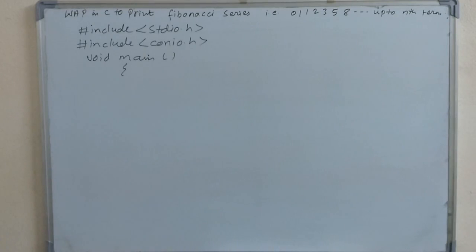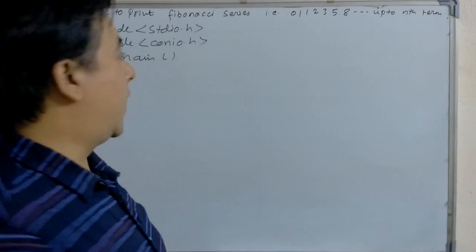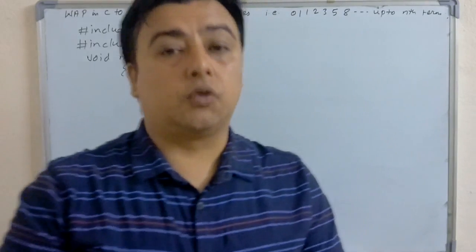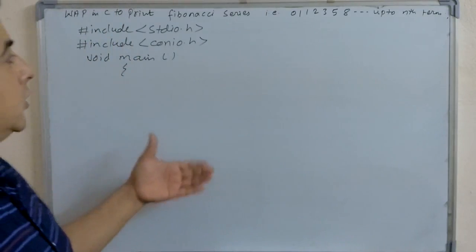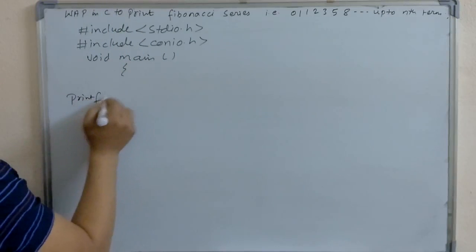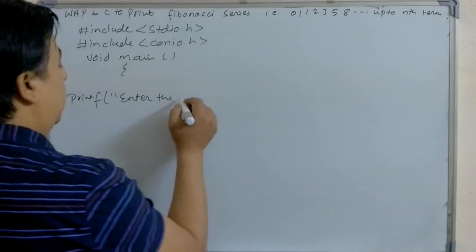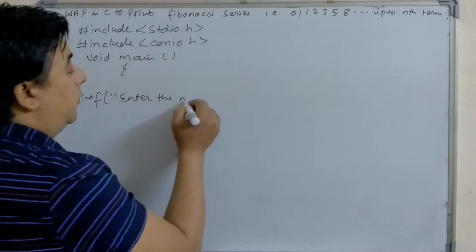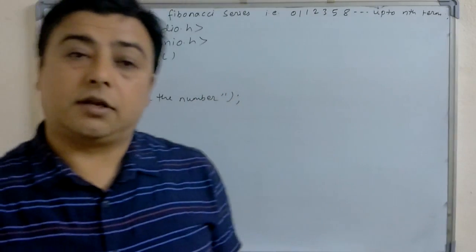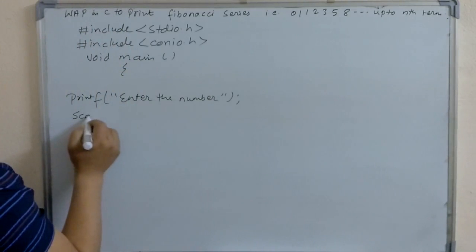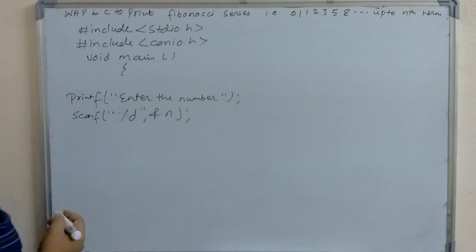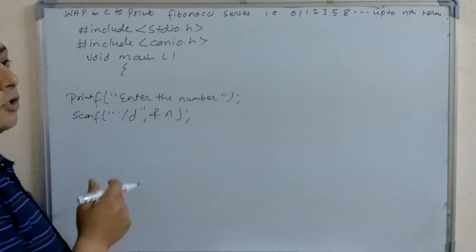After that, we have to declare some variables. But first, we have to ask the user how many terms they want to print. So we write printf to prompt the user to enter the number of terms, and then read the number using scanf with format specifier %d and variable n. This n is not yet recognized because we have to declare the variable.